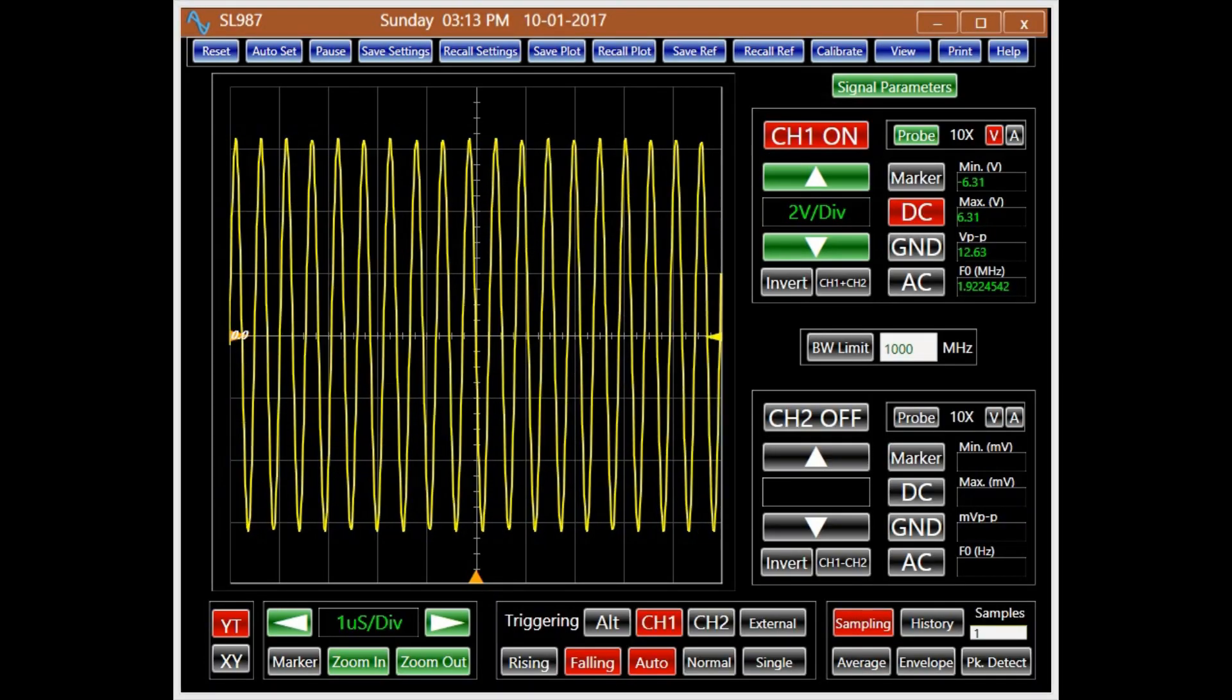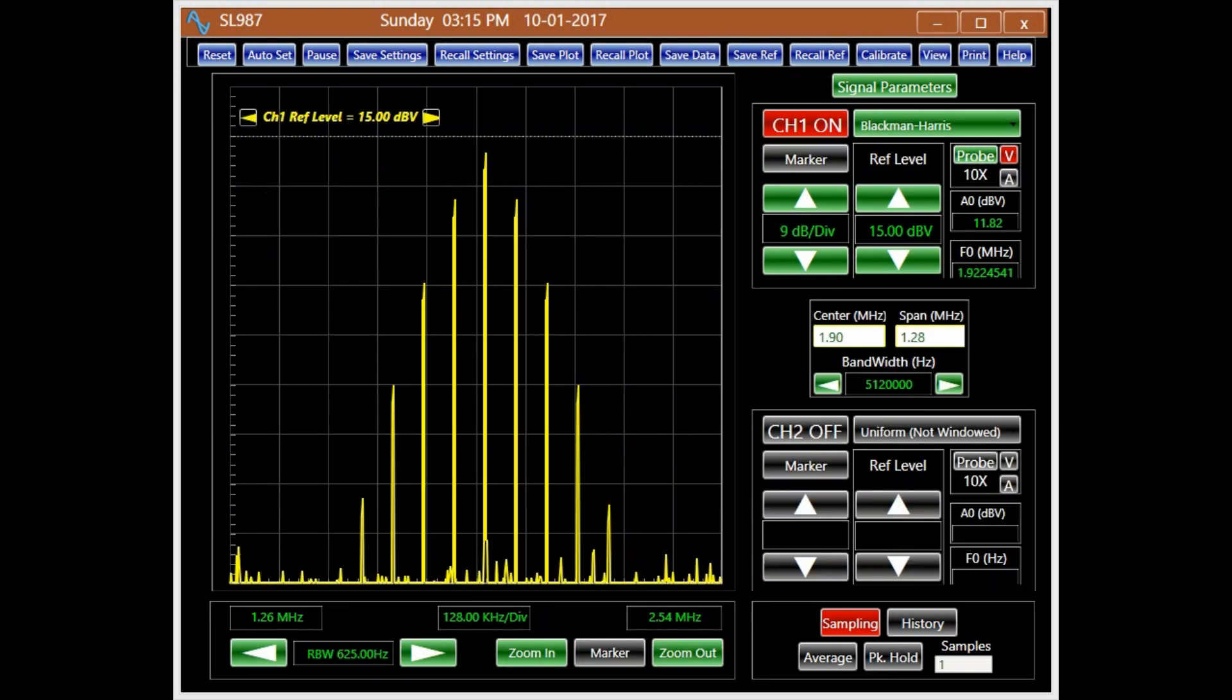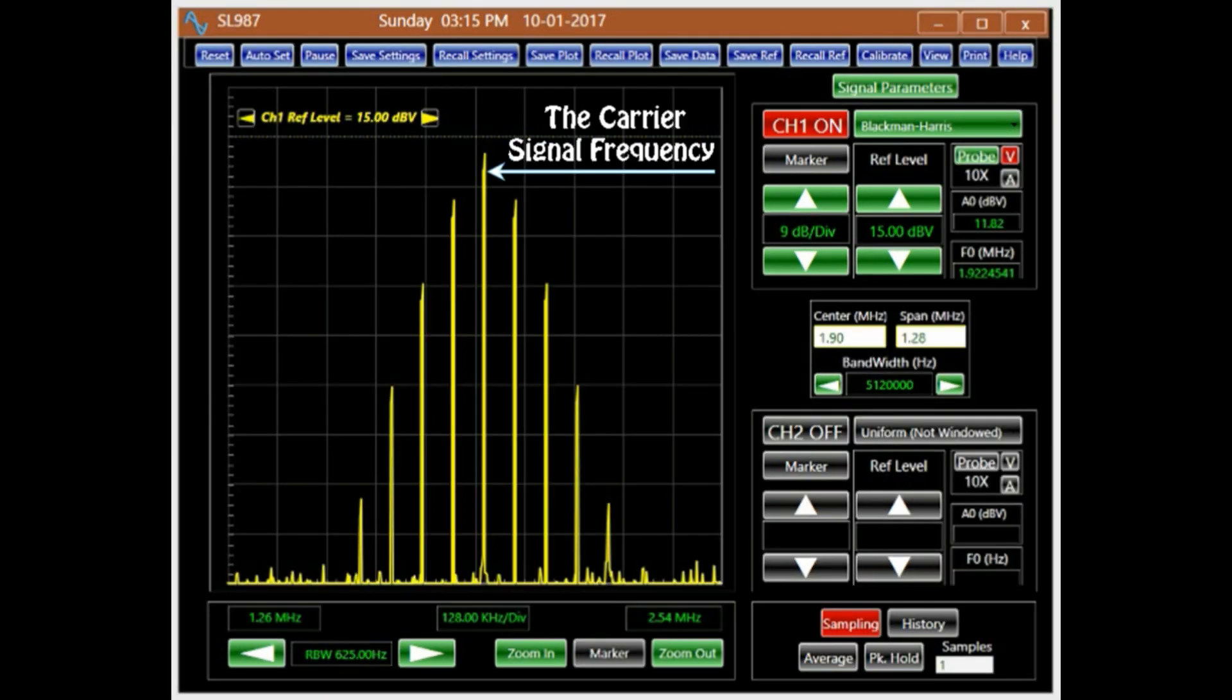In FM however, the frequency of the modulated signal characterizes the message. The spectrum of an FM signal represents various other frequency components of the signal. FM occupies a wider frequency band.